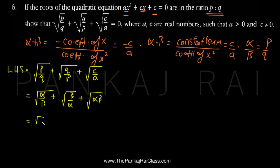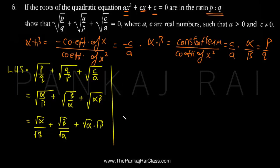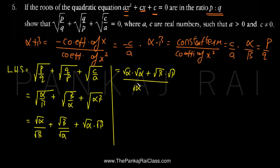Separating the roots, I'll write this as root alpha upon root beta plus root beta upon root alpha plus root alpha times root beta. Now let me cross multiply the first two terms, so we get root alpha times root alpha plus root beta times root beta, all upon root alpha times root beta, and this last term remains as root alpha times root beta.